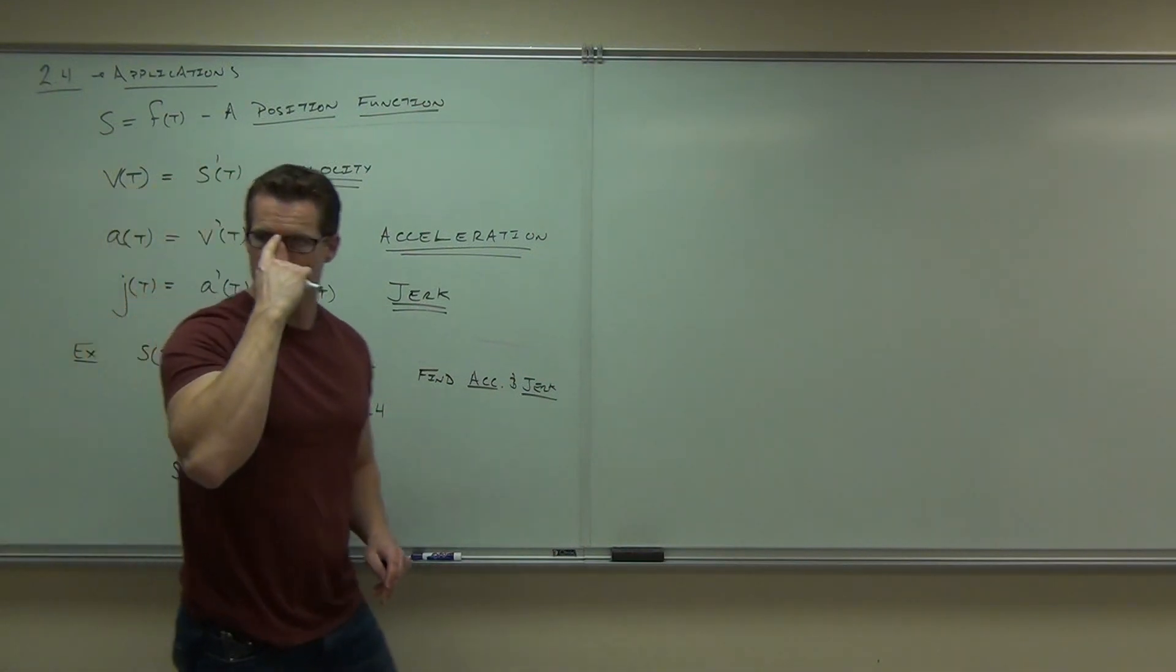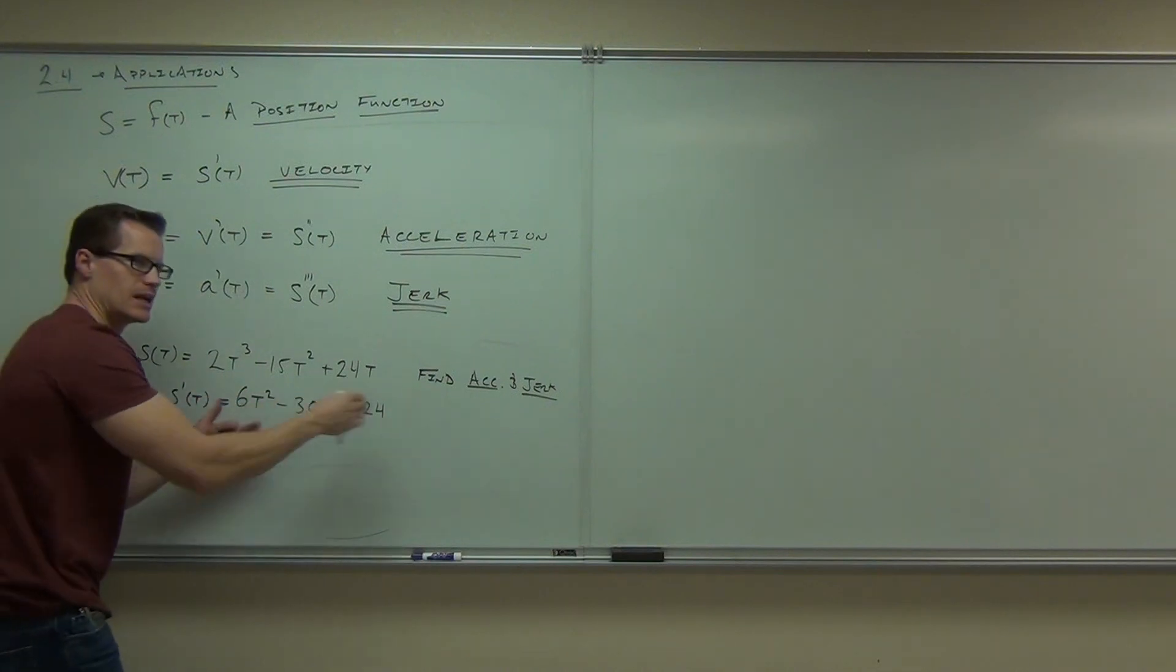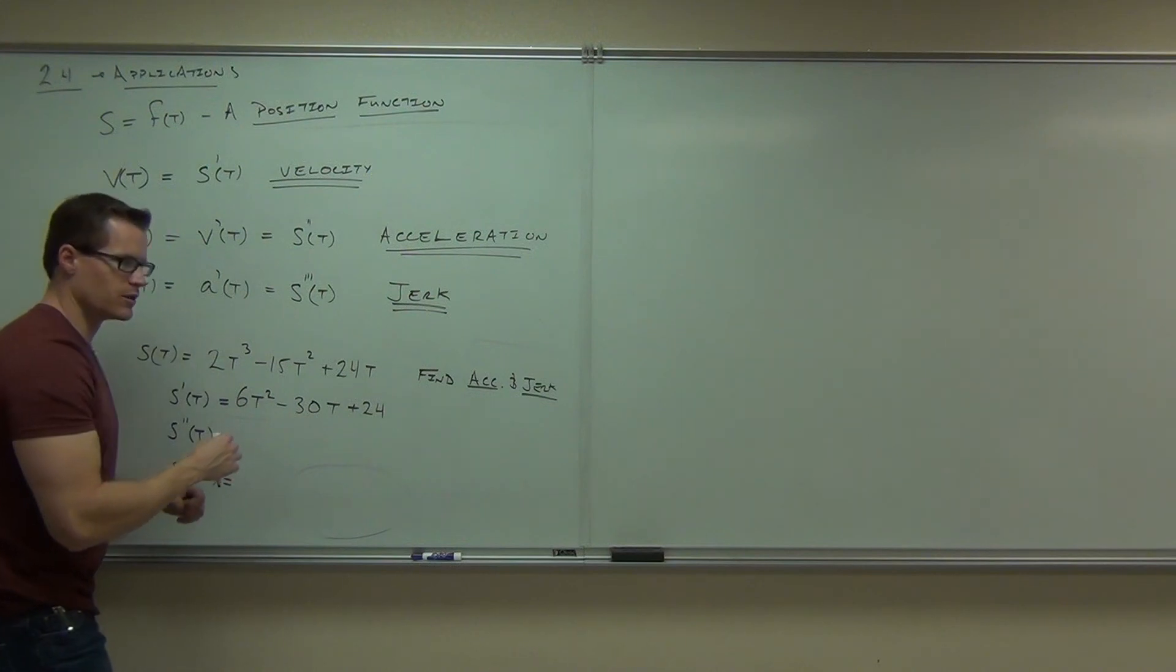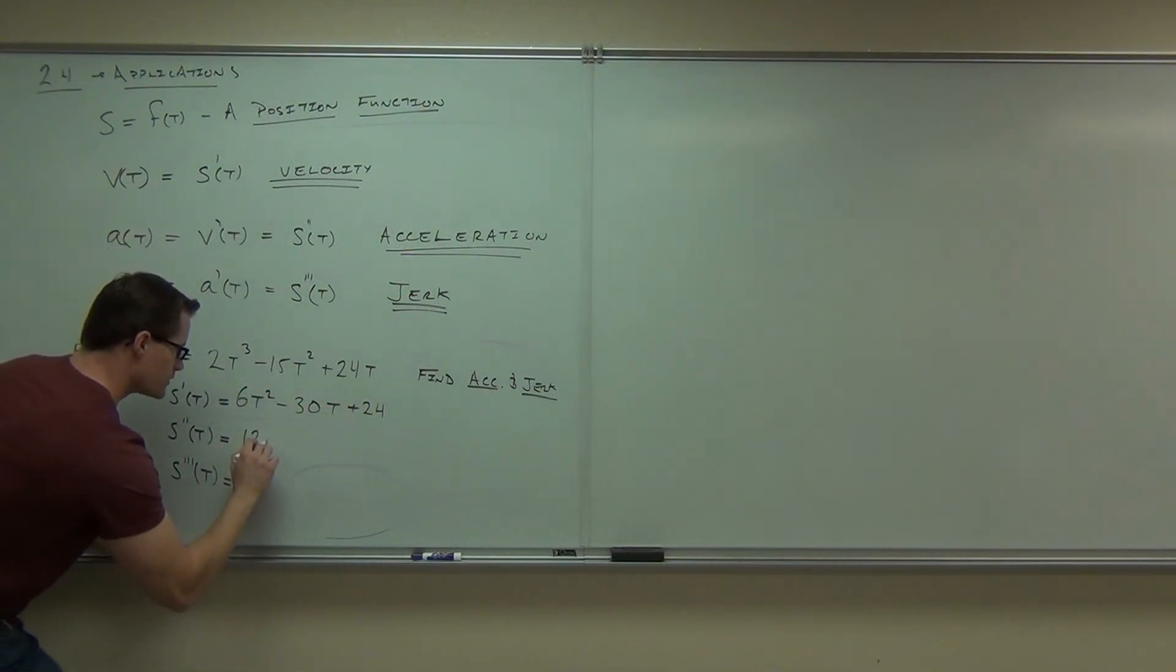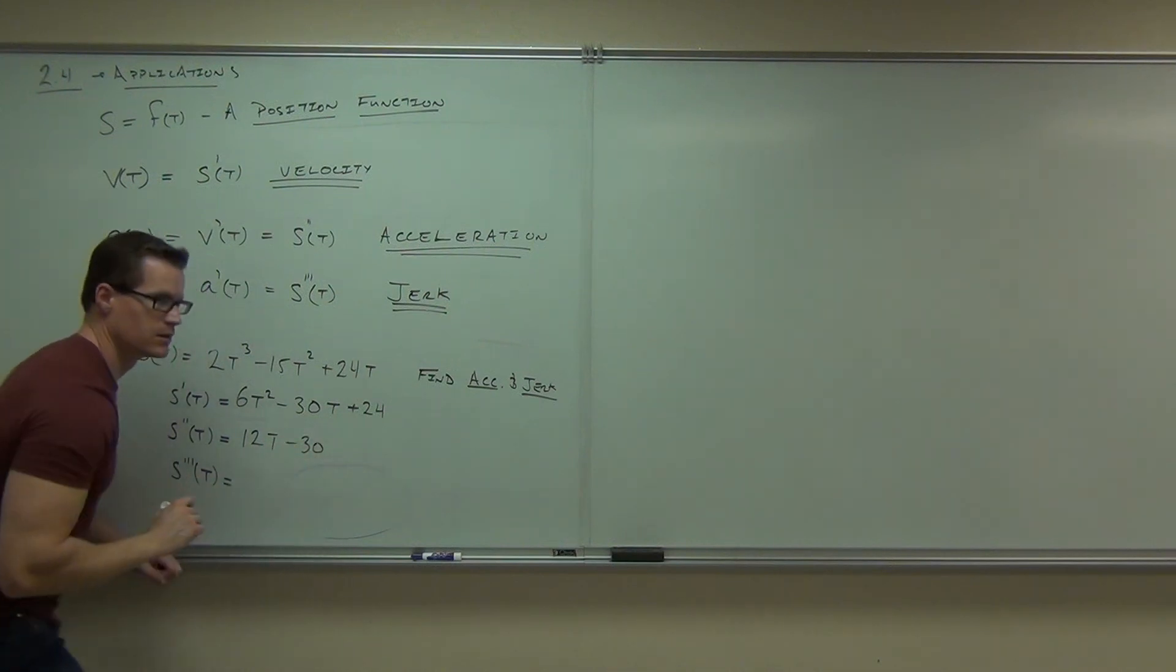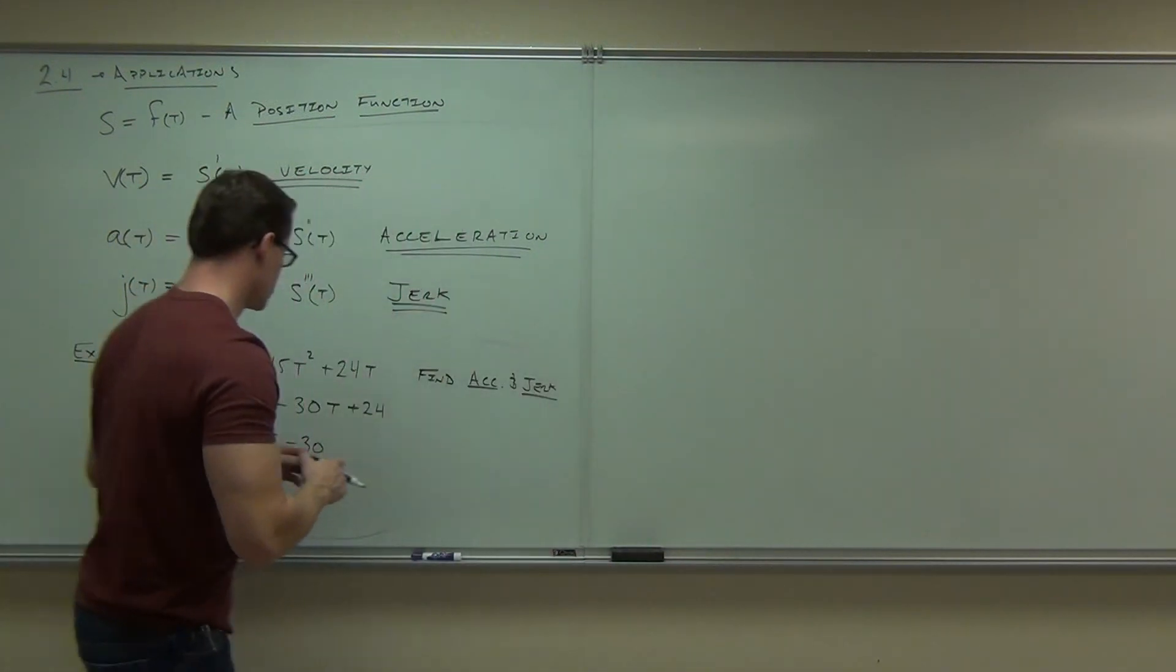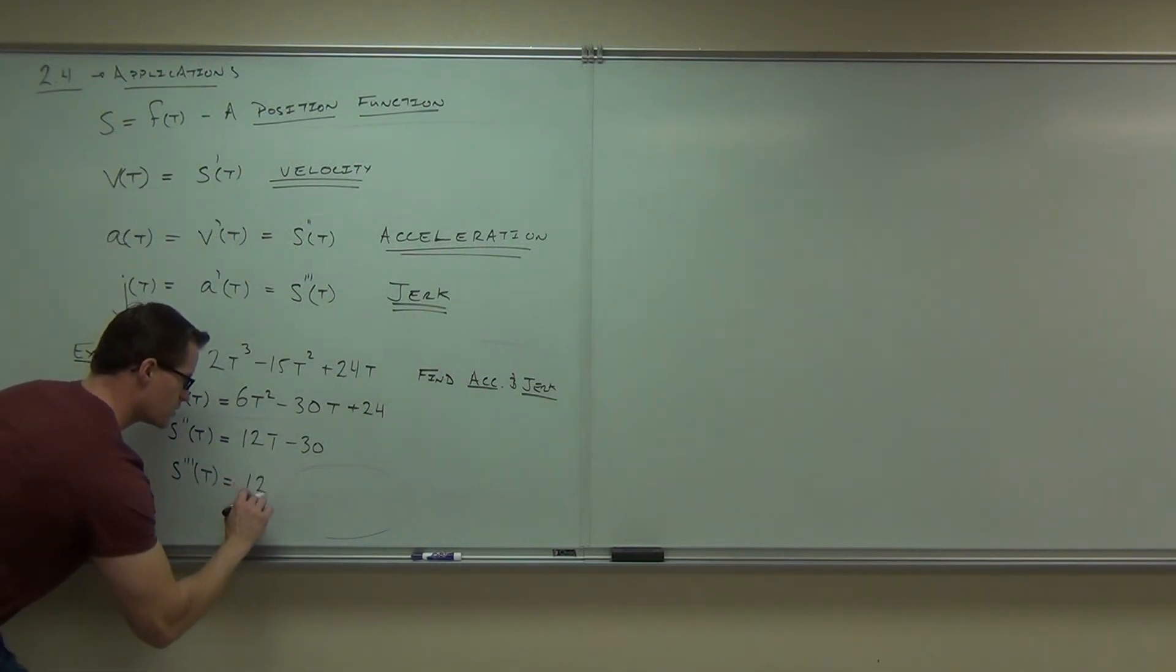Then you take a second derivative, you're way off. So be careful on that. So this would be the velocity at any given time, say how fast you're going. The acceleration will be the next derivative. How fast are you accelerating at any given time? This is going to be 12t minus 30. Lastly, the next derivative or third derivative should just be 12.